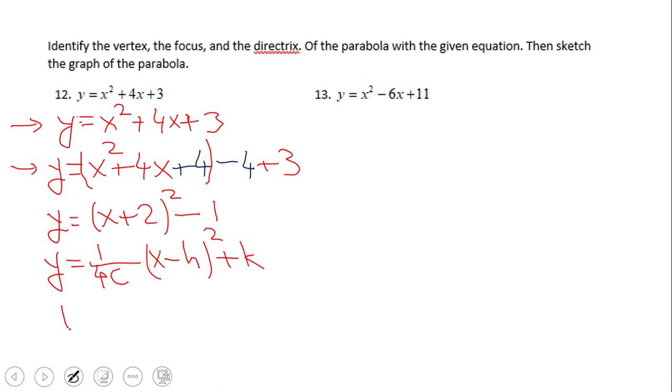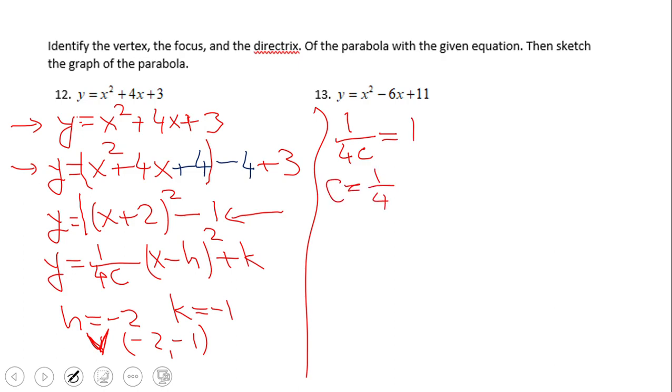First of all, let's notice that h is negative 2 and k is negative 1. So the vertex V will be negative 2 and negative 1. The next thing we can notice is that in front of this equation, right here, we have this invisible 1. So then I'm going to write 1 over 4c equals 1, which is going to give me c equals 1 over 4.